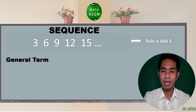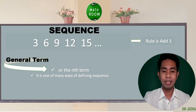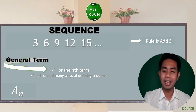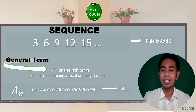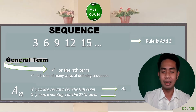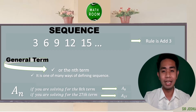Another term we need to know is the general term. The general term is simply the nth term, and it is one of the many ways of defining a sequence. It is denoted by a sub n. If we are looking for the 8th term, that is a sub 8. If you are solving for the 27th term, the nth term will be a sub 27.